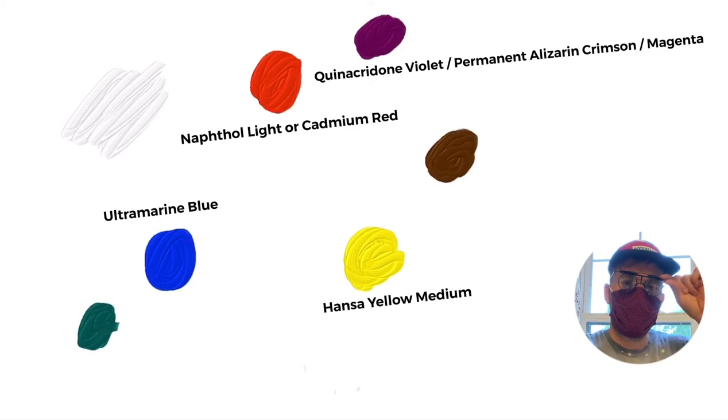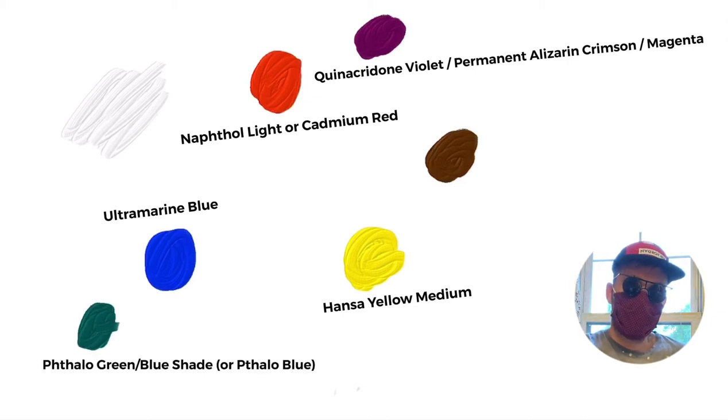The quinacridone, which I'm going to refer to as magenta, other similar name is alizarin crimson, but I'm going to keep referring to magenta because quinacridone I have a hard time saying. The other color I had you buy was the phthalo green blue shade, and then the burnt umber, which is kind of like a shade of orange, and of course the titanium white.